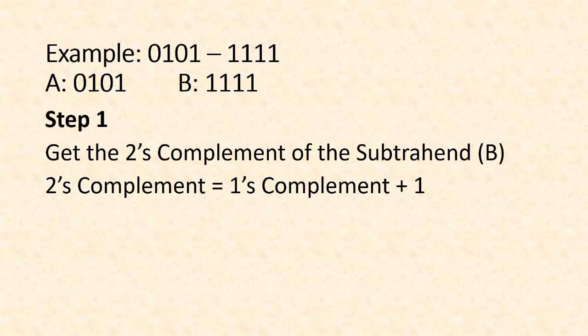So first we need to get the one's complement of the subtrahend B. In this example, the one's complement of 1111 is 0000. One's complement will just give the inverse of the value. The inverse of one is zero. The inverse of zero is one. So this is the one's complement.